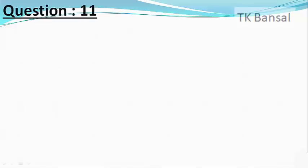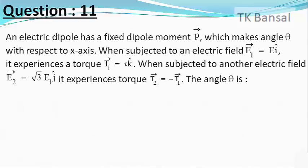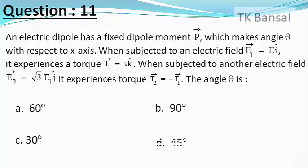Our next question is: An electric dipole has a fixed dipole moment P vector which makes an angle θ with respect to the x-axis. When subjected to electric field E₁ = E î, it experiences a torque T₁ = τ k̂. When subjected to another electric field E₂ = √3 E₁ ĵ, it experiences a torque T₂ = −T₁. The angle θ is — choices are 60°, 90°, 30°, and 45°.